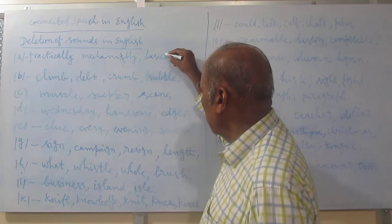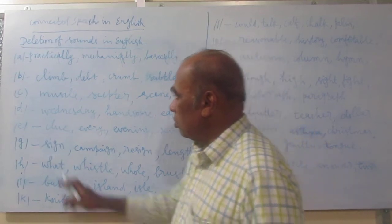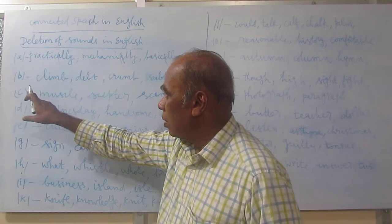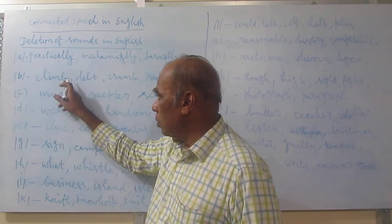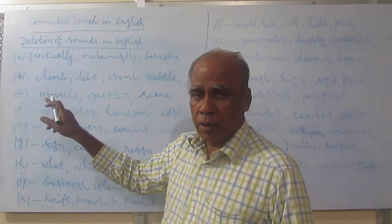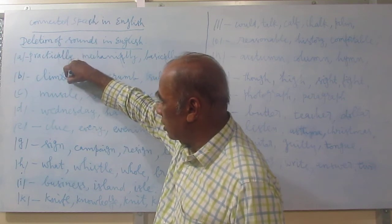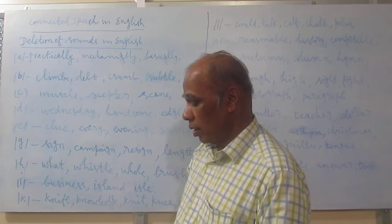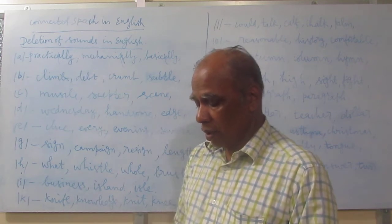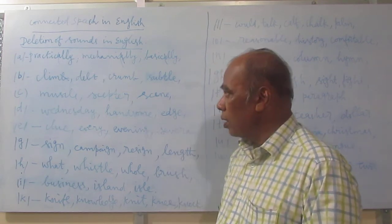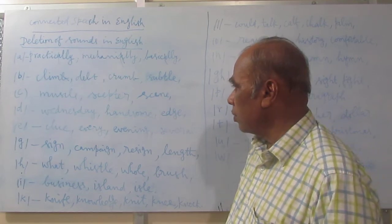And then 'basically', 'logically'. Next, the 'b' sound — 'b' is deleted in certain words. For example, whenever a word ends with 'b' and it is preceded by the 'm' sound, 'b' becomes silent. So we can say: climb, crumb, limb, comb. There are also words like lamb and damn where 'b' is silent.